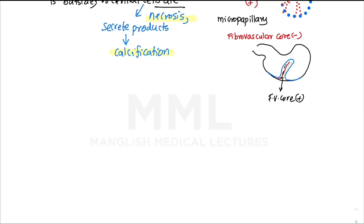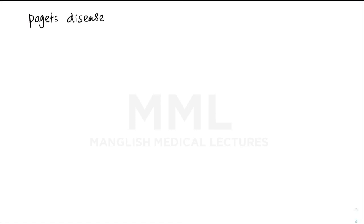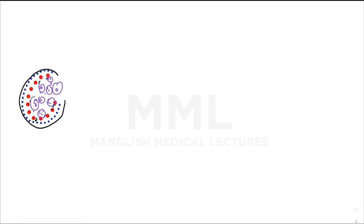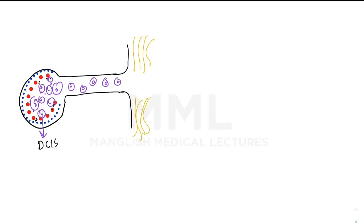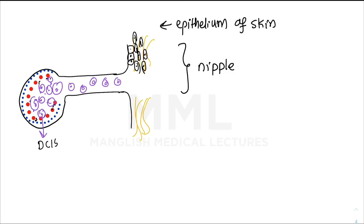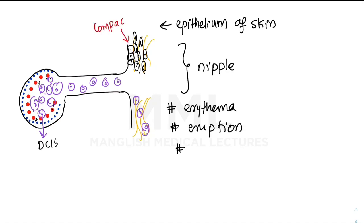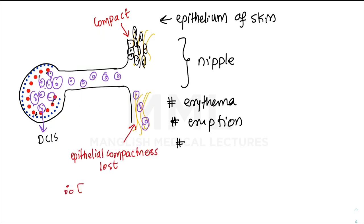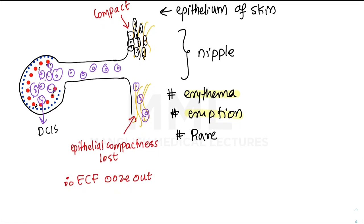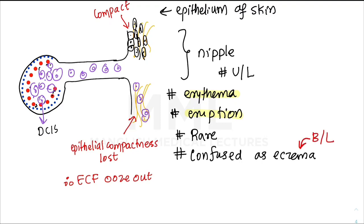Another important variant of DCIS is Paget's disease of the nipple. Here, DCIS cells migrate through the ducts to the nipple and infiltrate the epithelium. This invasion disrupts the compactness of the epithelium, causing extracellular fluid to ooze out, presenting clinically as erythema and eruption. It is a rare entity often confused with eczema, but remember: eczema is bilateral while Paget's disease is unilateral.